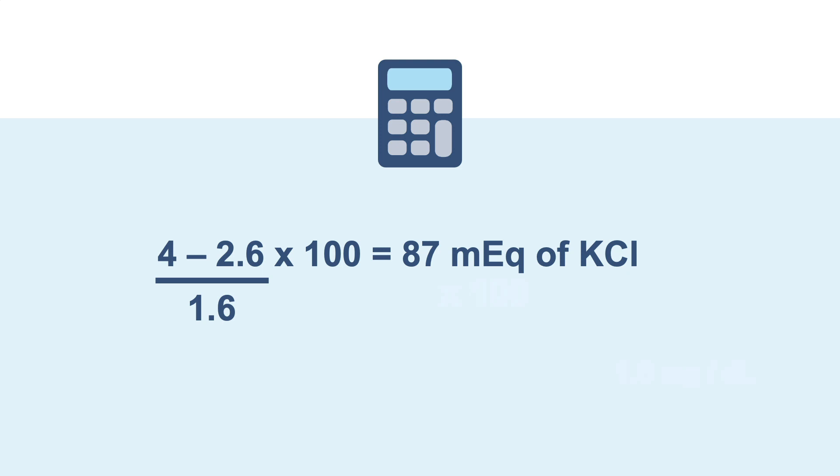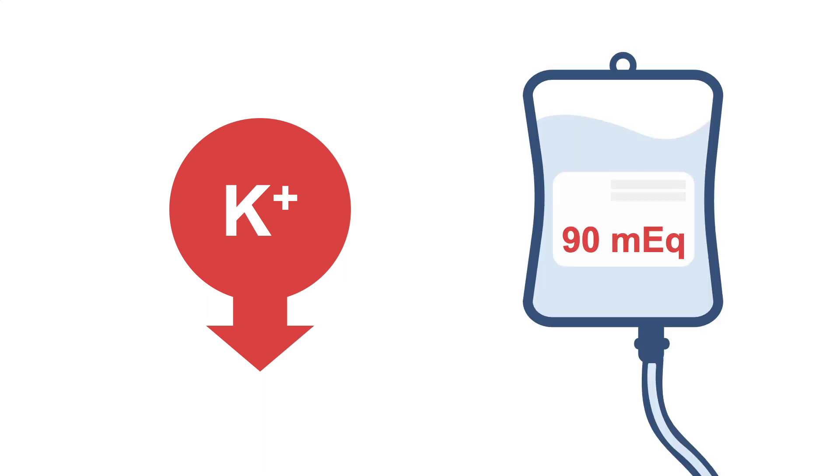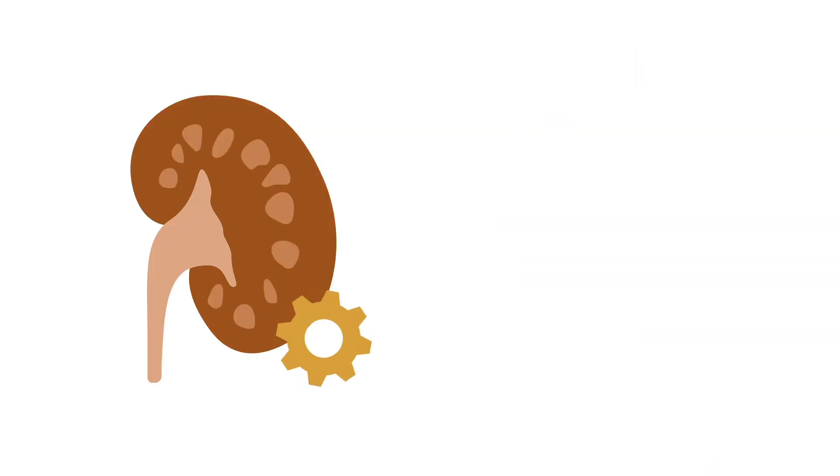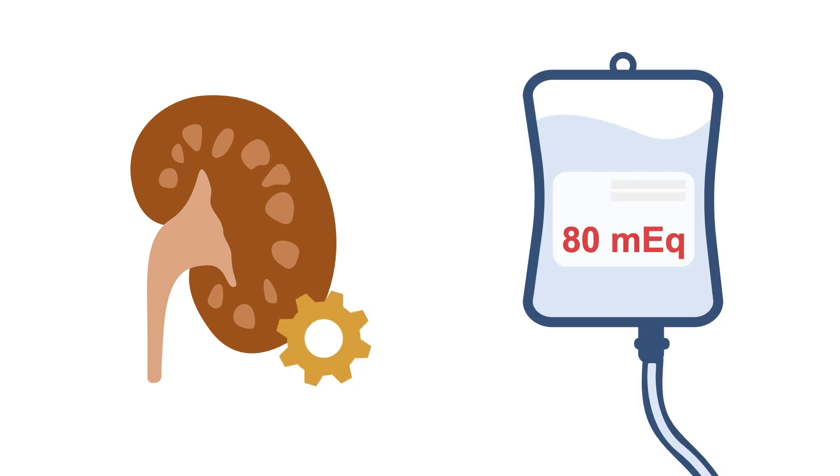This is an awkward number to prescribe. You need to pick whether you're going to give 80 milliequivalents or 90 milliequivalents. Whether to choose the lower or higher dose option depends on how worried you are about undershooting or overshooting your goal. If your patient has been hypokalemic for several days and you anticipate ongoing potassium losses, you might choose the higher dose option. If you are worried that the patient's renal function will worsen, you might choose the lower dose option.